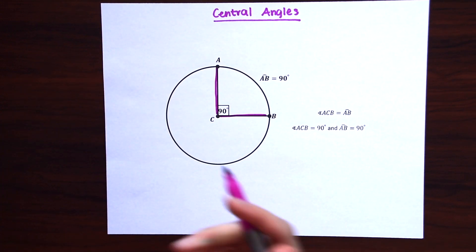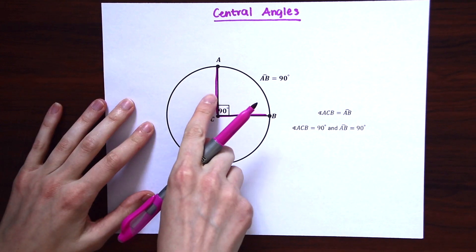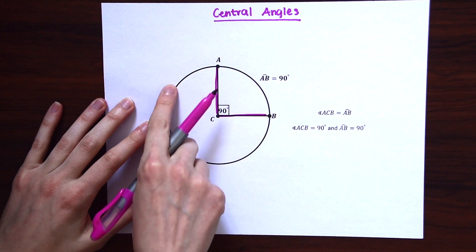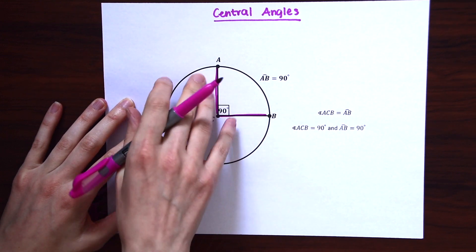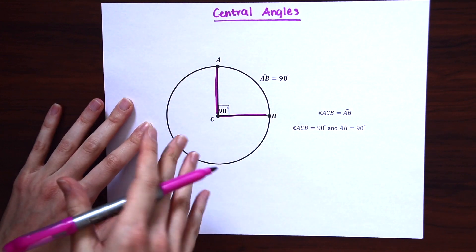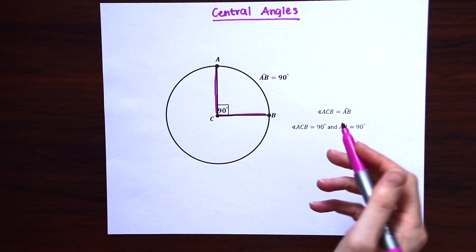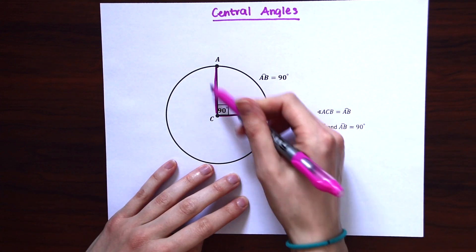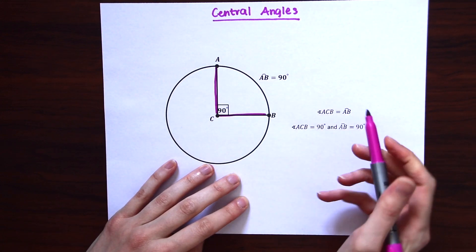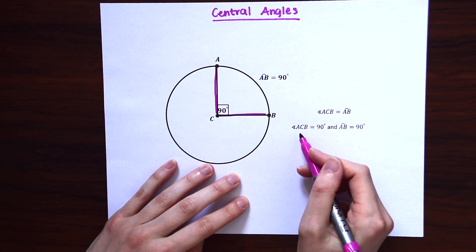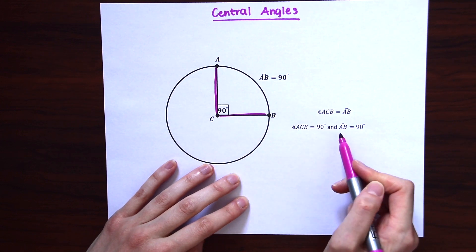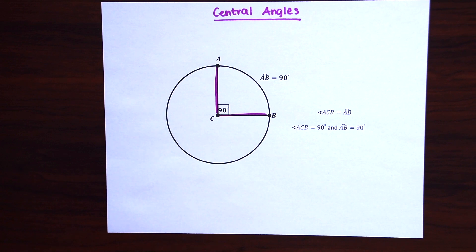And notice that the arc AB is also equal to 90 degrees. So that's all central angles are. And so this example is 90 degrees, but if A was over here and this line was over here, these can form different value angles. So just written in math right here we have angle ACV is equal to arc AB. And here we have angle ACV equals 90 degrees and then arc AB equals 90 degrees.